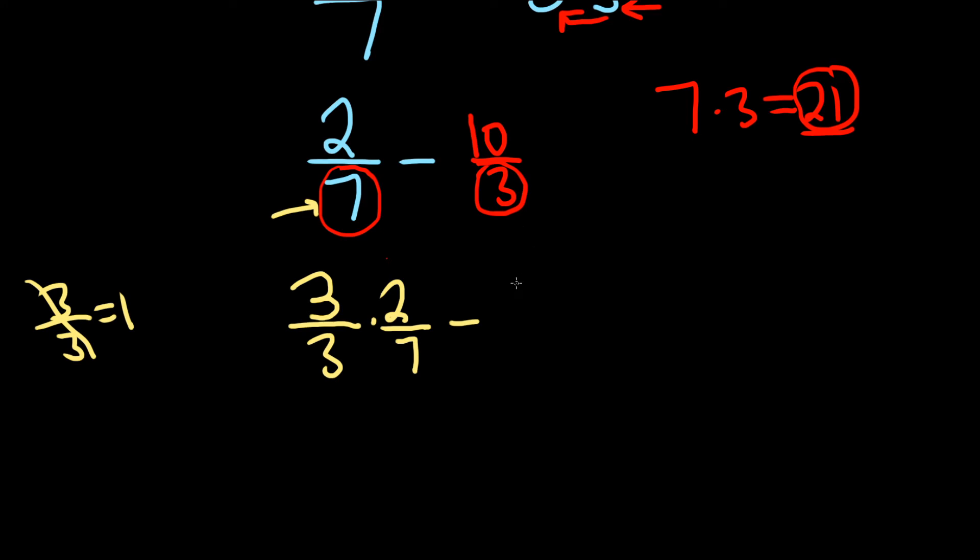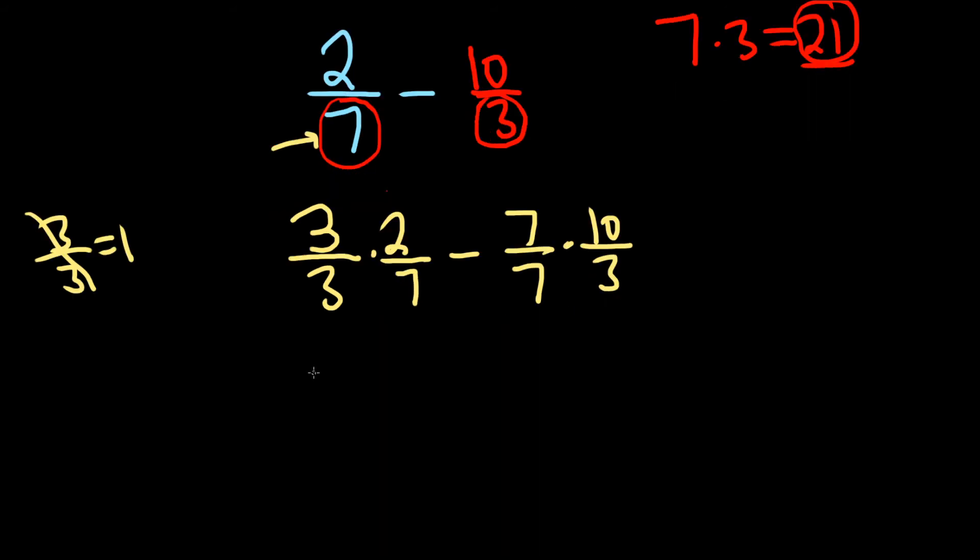10 over 3, well, we're missing the 3. So we'll multiply it by 7 over 7, and then we have times 10 over 3. Good stuff. Now we can multiply straight across. 3 times 2 is 6, 3 times 7 is 21, minus, 7 times 10 is 70. That's really big. And then 7 times 3 is 21. Good stuff. 6 minus 70 is negative 64, so you have negative 64 over 21.